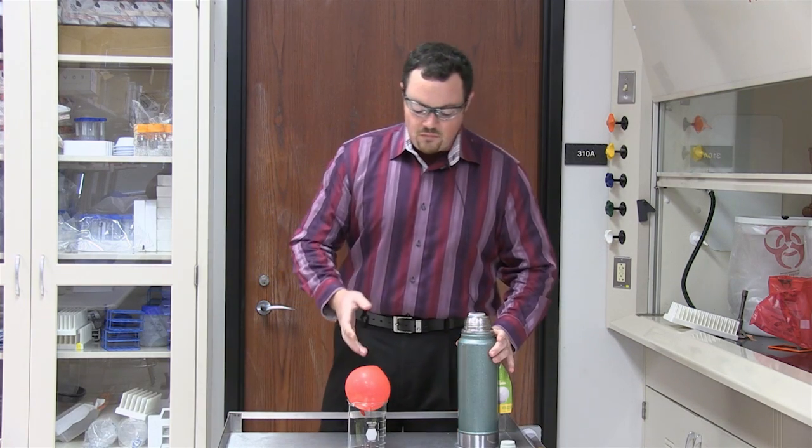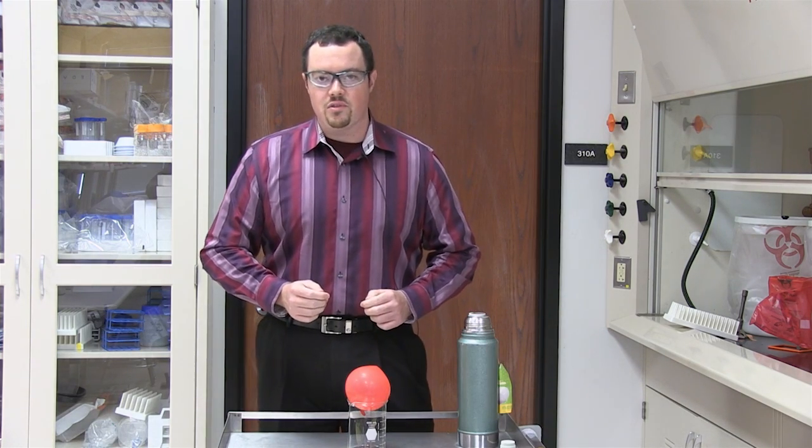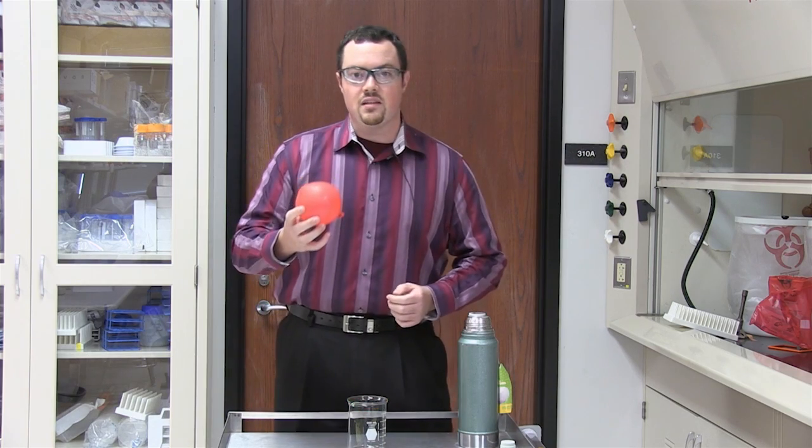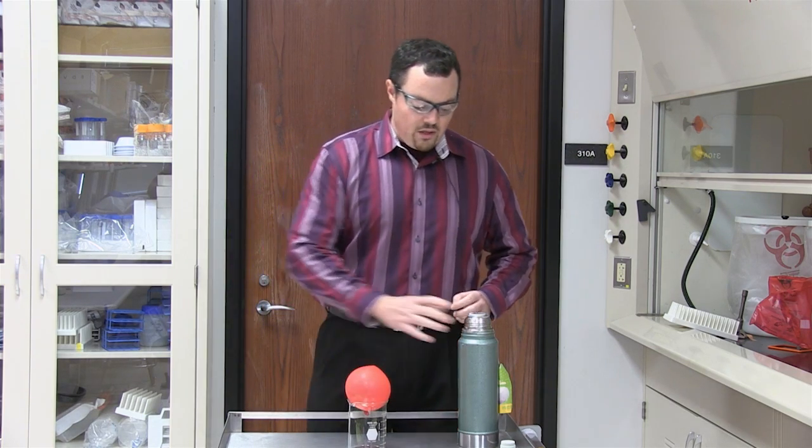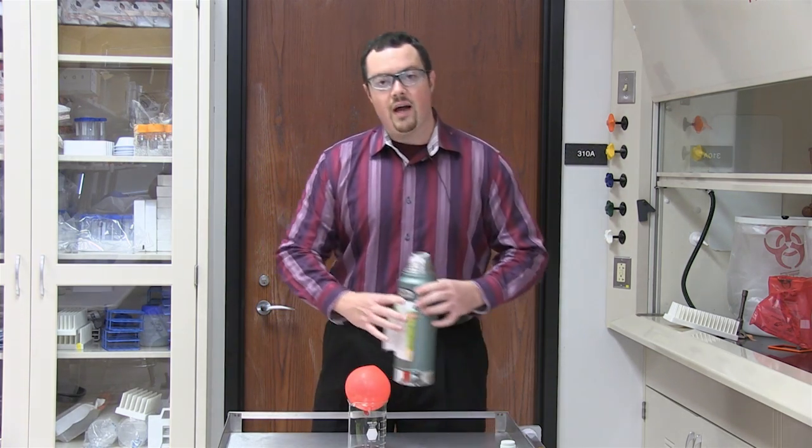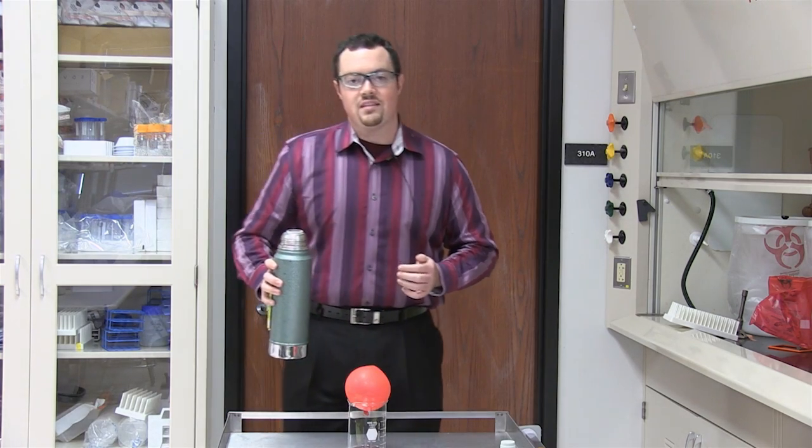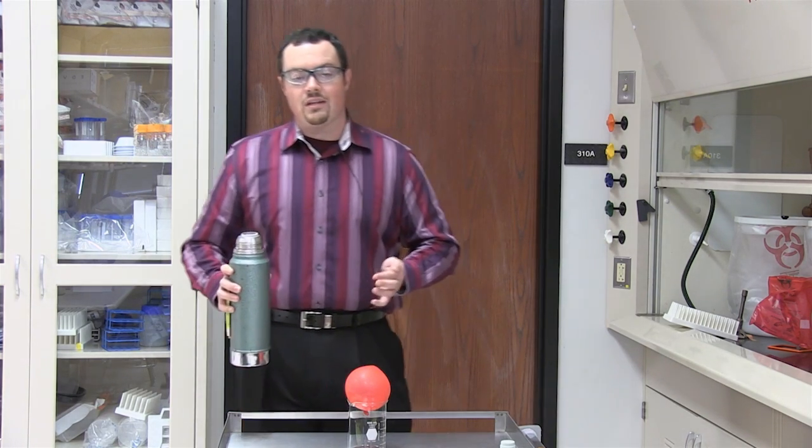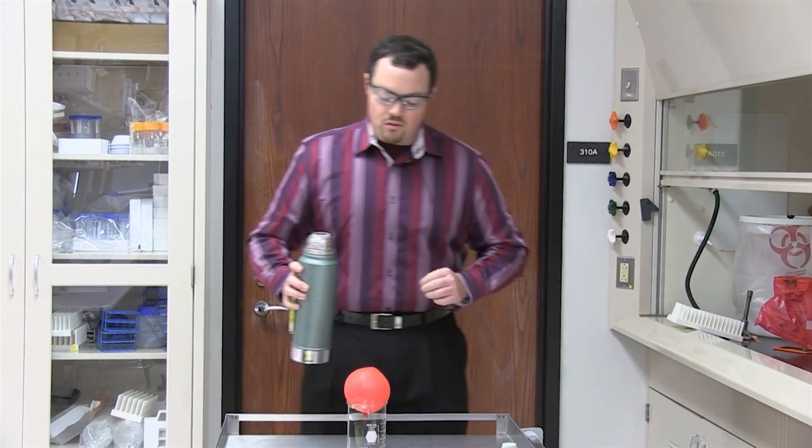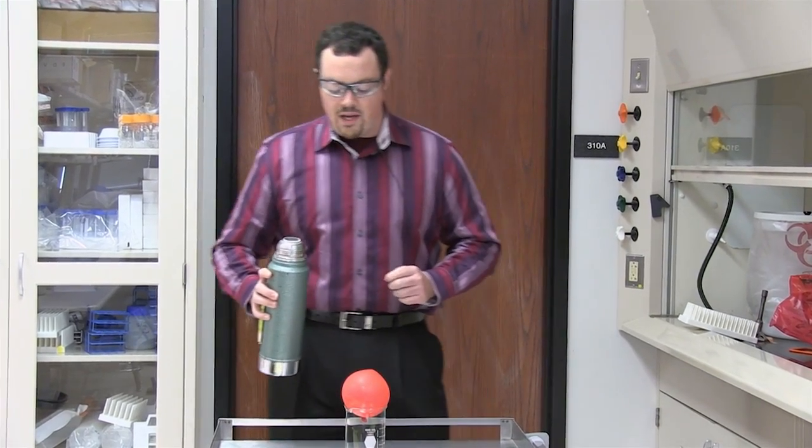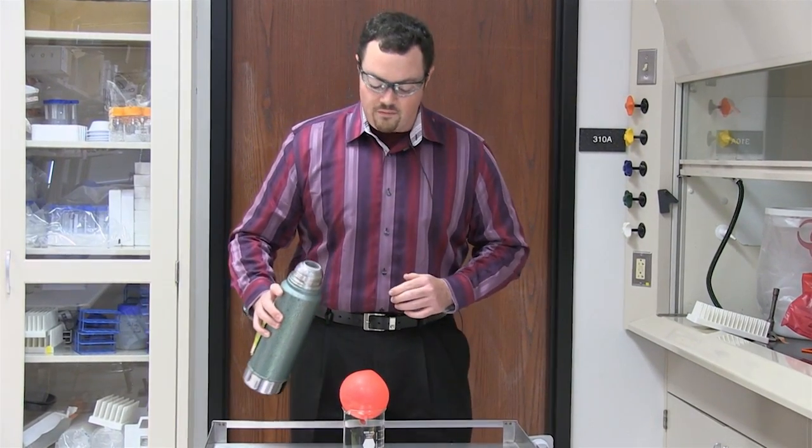So what we want to do is we want to show this direct relationship by decreasing the temperature of the gas in this balloon here. We're going to do that using liquid nitrogen. Liquid nitrogen at a temperature of negative 196 degrees Celsius will decrease the temperature of the gas in the balloon. Let's see what happens to volume.